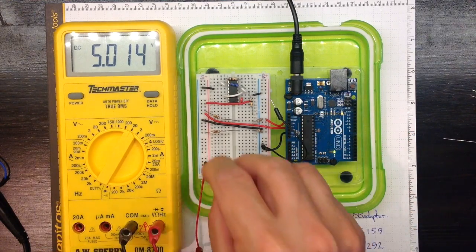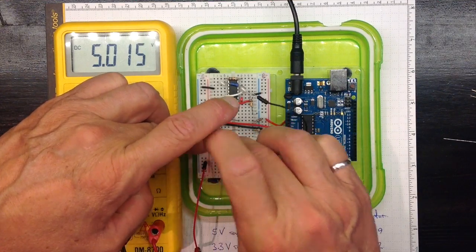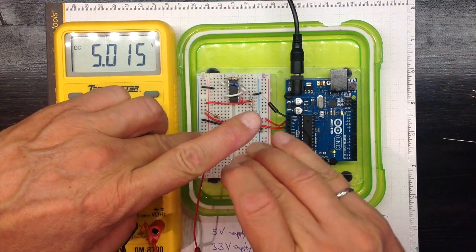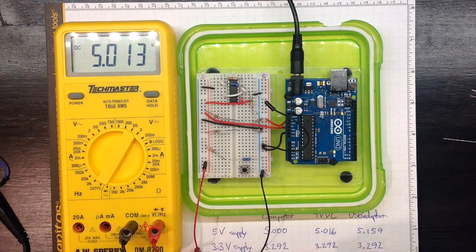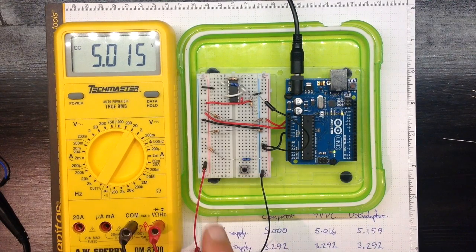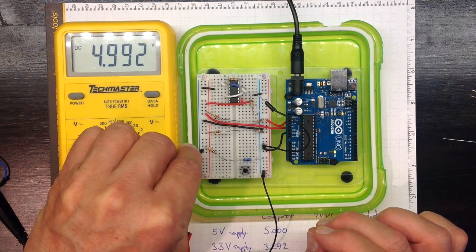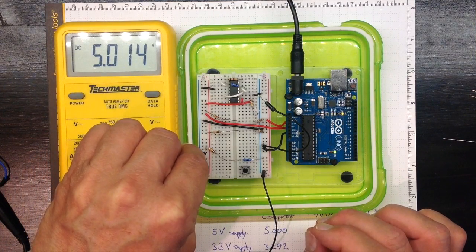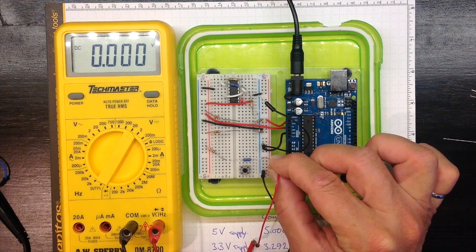So if I connect this one to plus 5 volts and connect the other end of it to the 2K resistor, and the 2K resistor is connected to ground, then I should see 5 volts right here, which I do, and 0 volts right here, which I do.